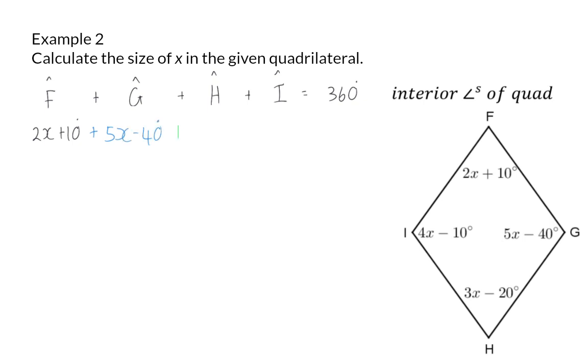H is 3X minus 20, and I is 4X minus 10, and this should all be equal to 360 degrees.